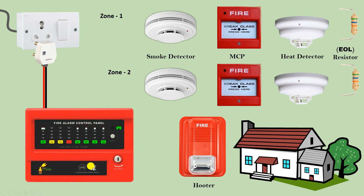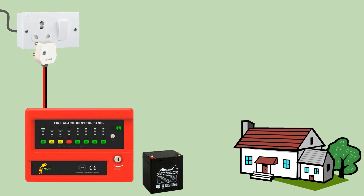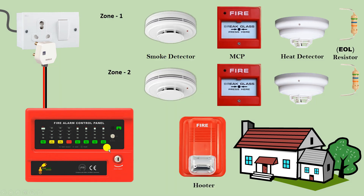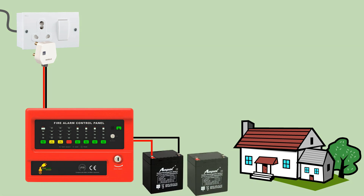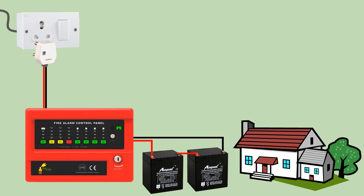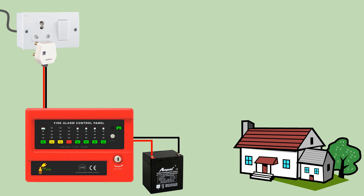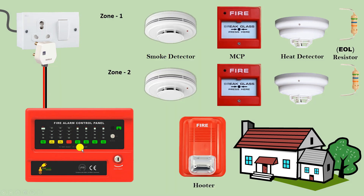Inside the control panel you also have to do a battery connection. Some panels have a small internal battery with two wires — just connect positive and negative. Keep in mind whether the battery is 12 volt or 24 volt. If it is 24 volt you need two batteries; if it is 12 volt you use a single battery.